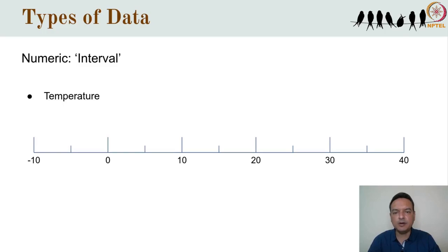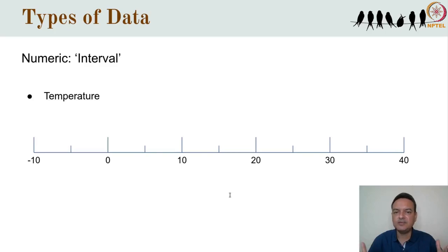But if you think about it, although you can say that 20 degrees is 10 degrees hotter than 10 degrees, you can't say that 20 degrees is twice as hot as 10 degrees. Similarly, you can't say that 30 degrees is 1.5 times as hot as 20 degrees. In other words, taking the ratio of two numbers on an interval scale does not make sense.